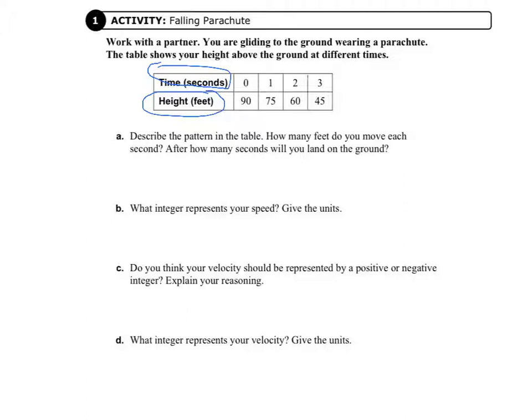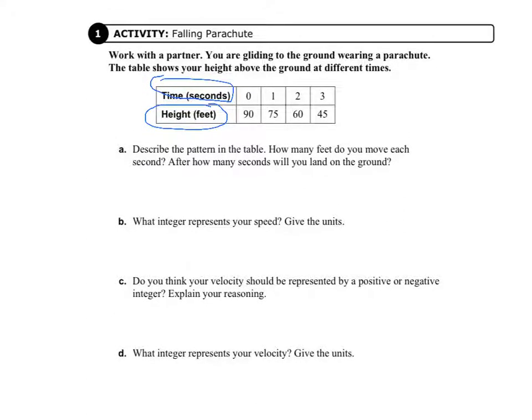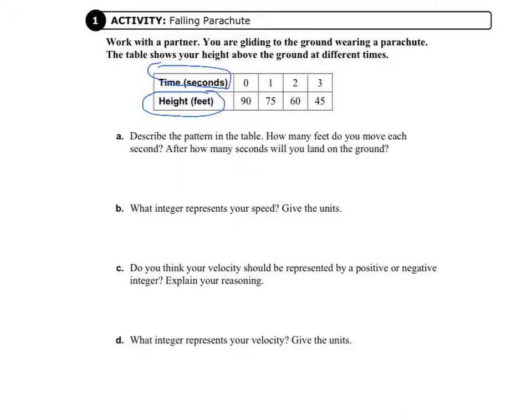When one second has passed, we're at a height of 75 feet. When two seconds have passed, we're at 60 feet. When three seconds have passed, we're at 45 feet. You'll notice that as time passes, we are at a lower and lower height because our parachute is falling. It says describe the pattern in the table — our height is decreasing.